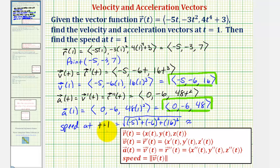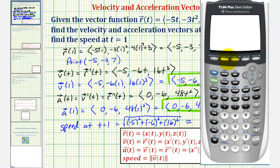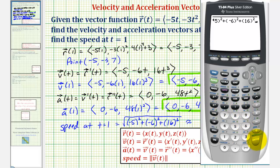Now we'll go to the calculator to get our decimal approximation. Using the square root function, we have negative five in parenthesis squared, plus negative six squared, plus sixteen squared. So the speed at t equals one would be approximately 17.8045 units per second, if we assume time t is in seconds.